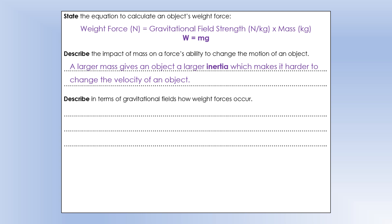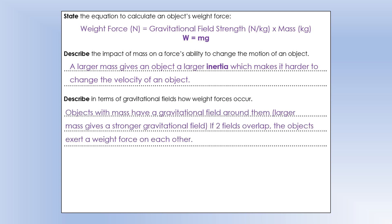Describe in terms of gravitational fields how weight forces occur. Objects with mass have a gravitational field around them. The larger mass gives a stronger gravitational field. Here's an object, and here's our representation of the gravitational field around it. If we put another mass into that field and their fields are overlapping, those objects will exert a weight force on each other. Both objects exert weight forces on each other, and they'll actually be equal in size.